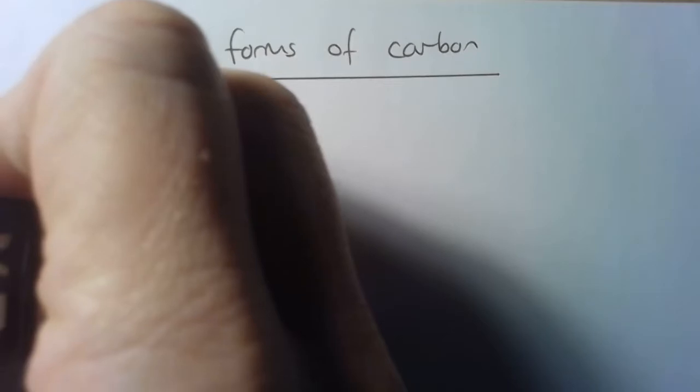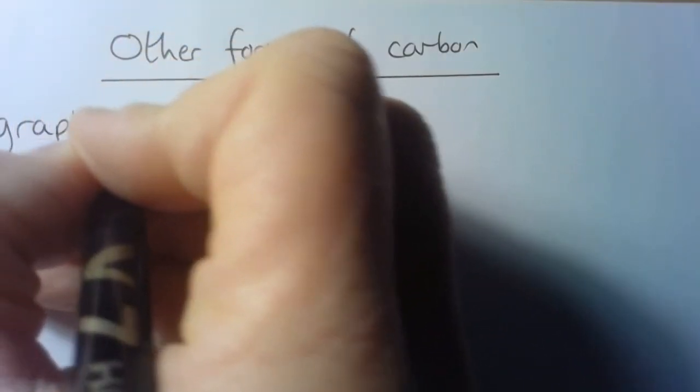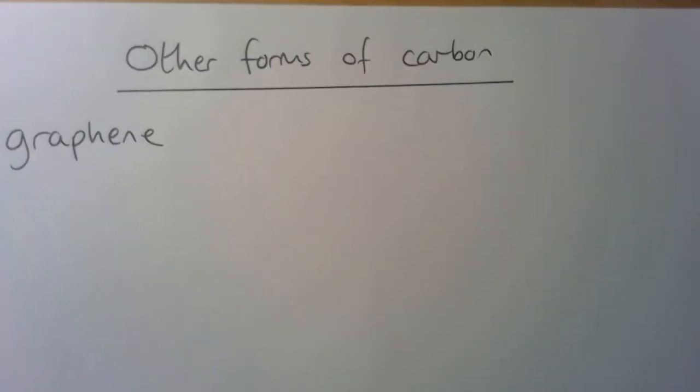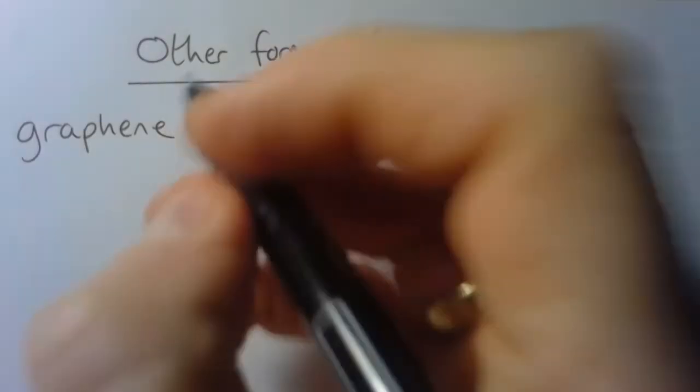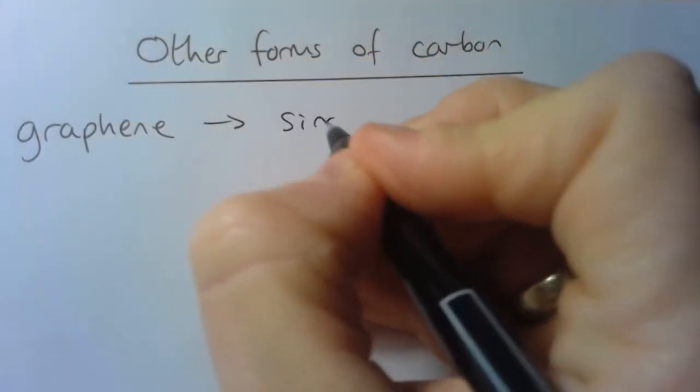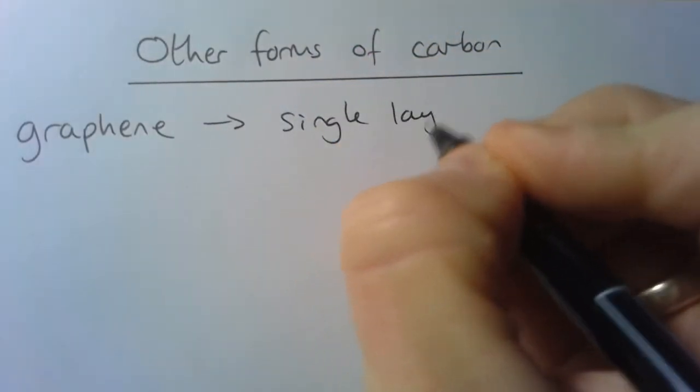So the first one is graphene. The word graphene is very similar to the word graphite, and in fact, graphene is just a single layer of graphite.